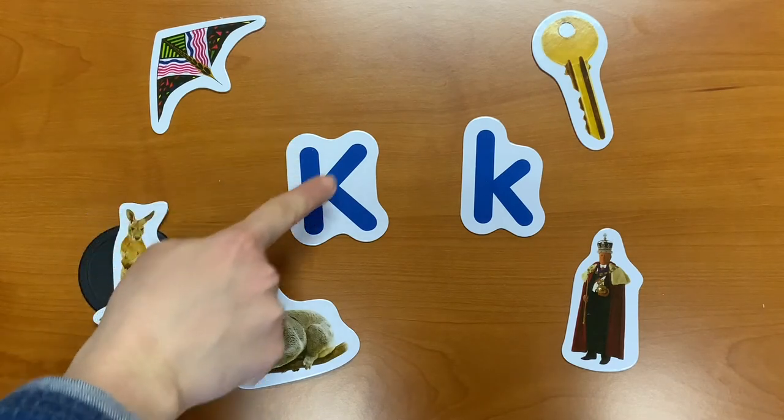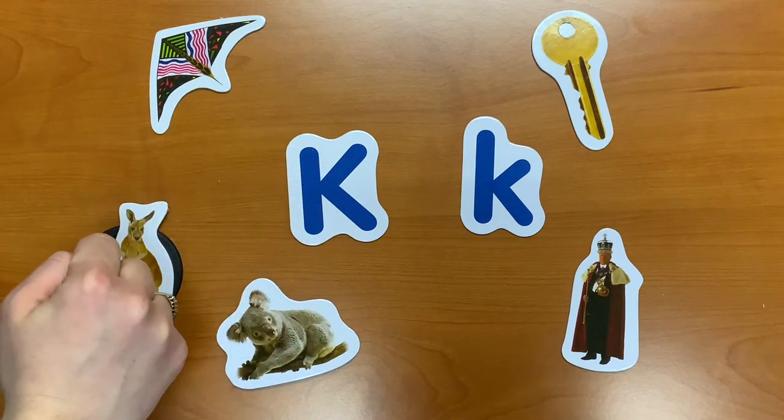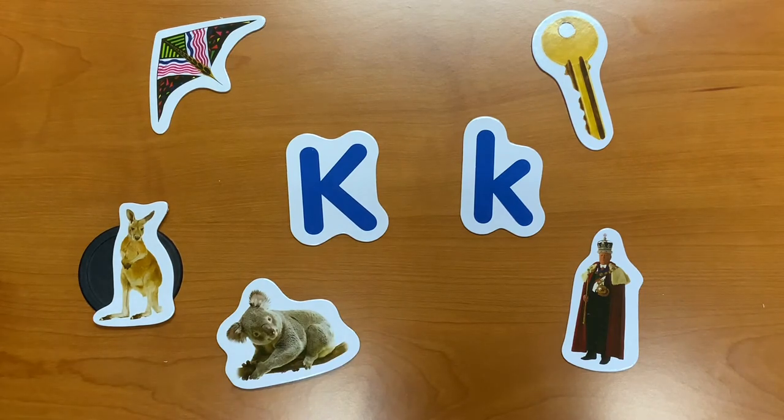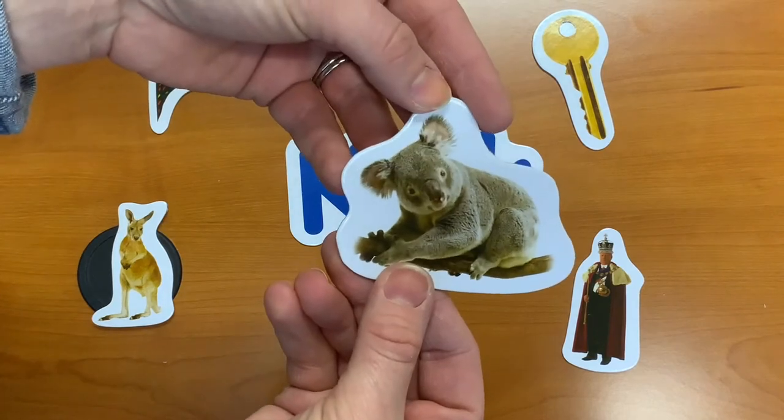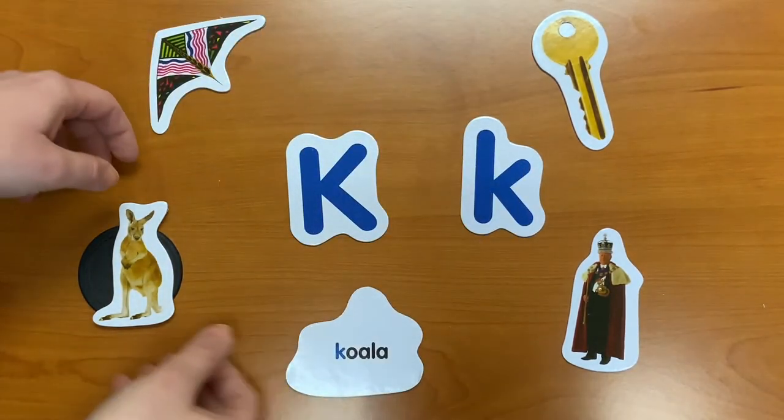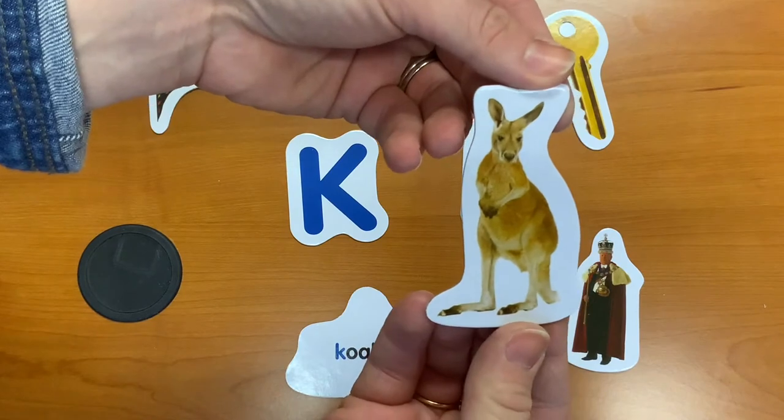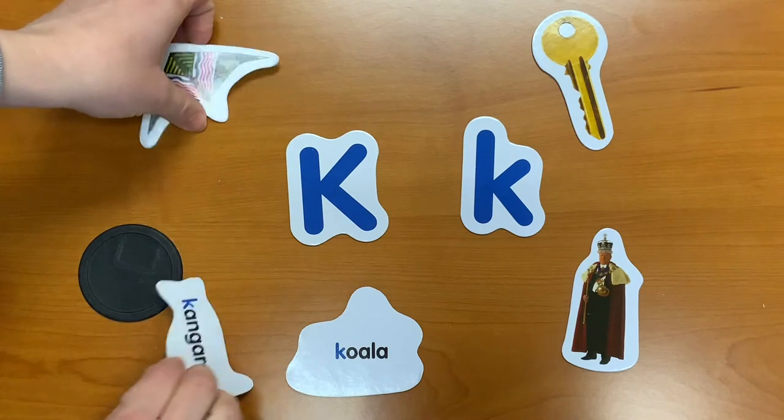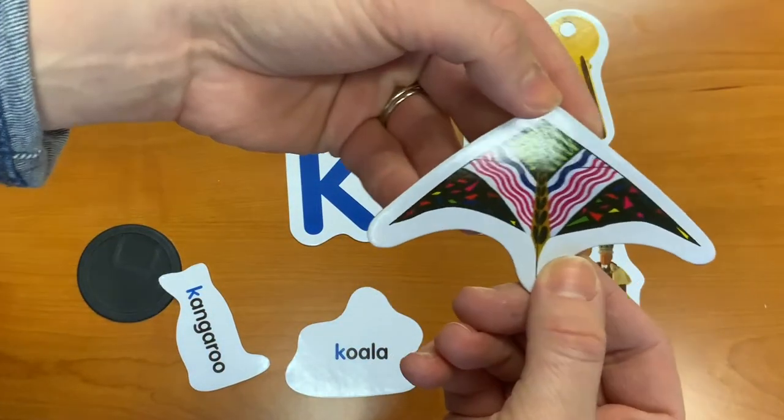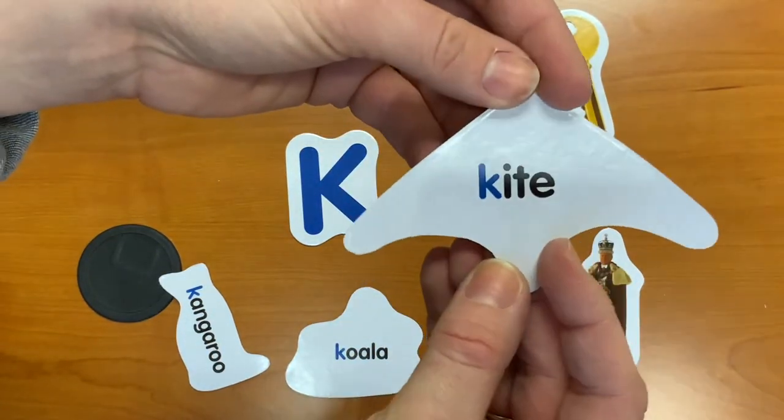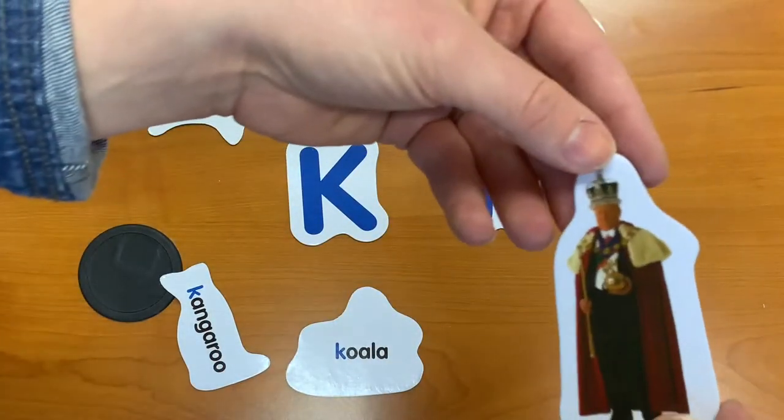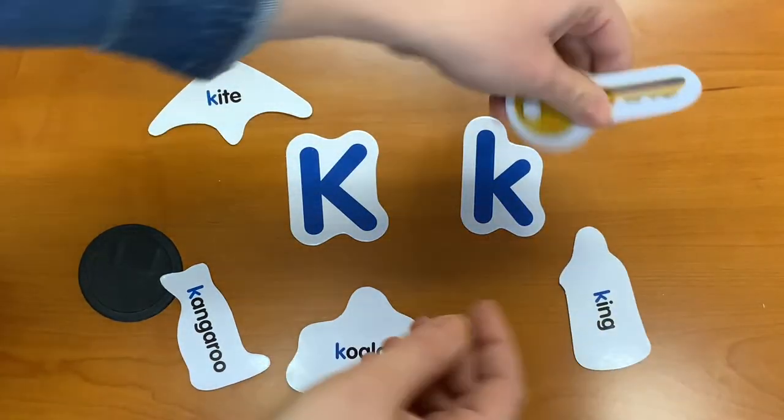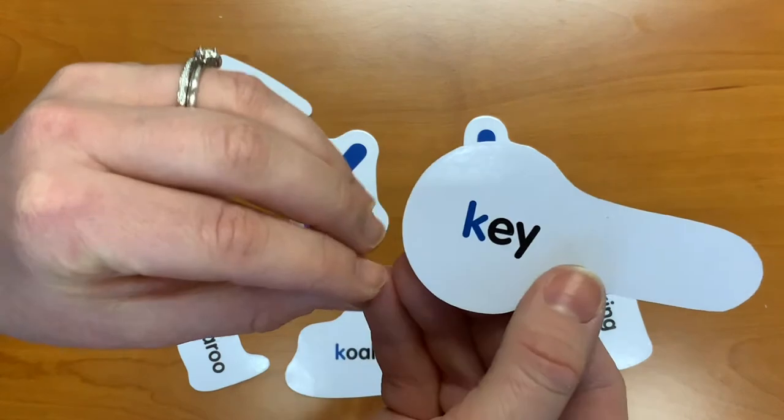We've learned about what an uppercase letter K looks like and a lowercase letter K, but what words begin with the letter K? Koala, kangaroo, kite, king, and key.